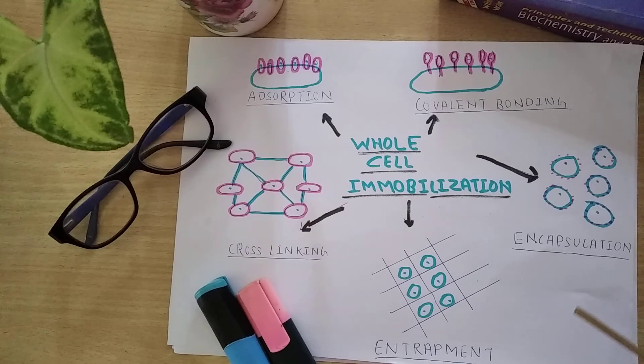for entrapment: polyacrylamide gel, cellulose triacetate, agar, gelatin, alginate, etc. Now methods of entrapment. First method is inclusion